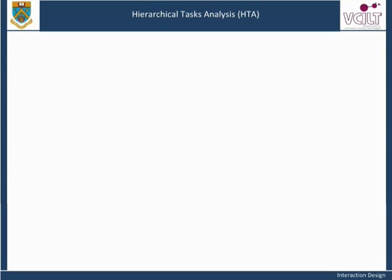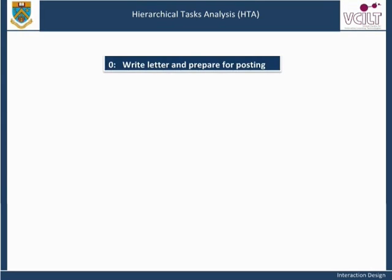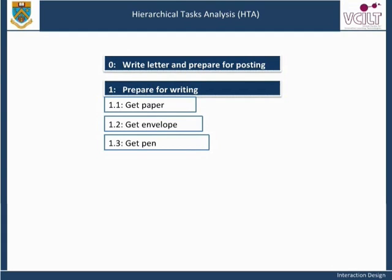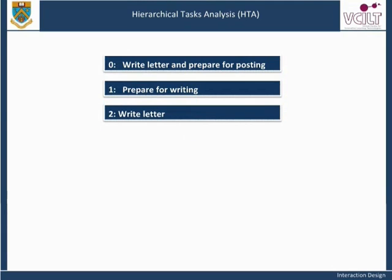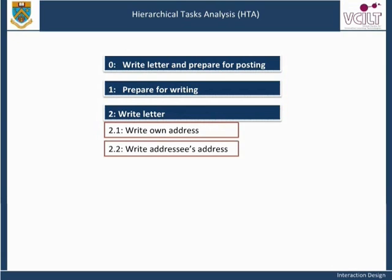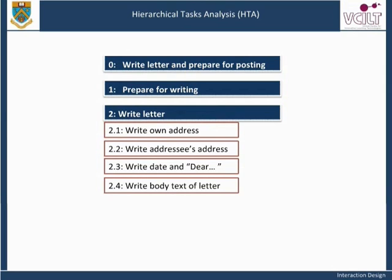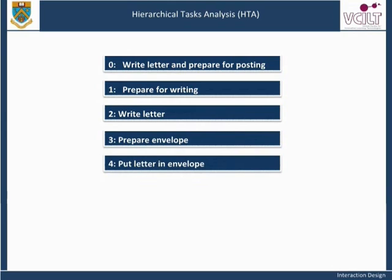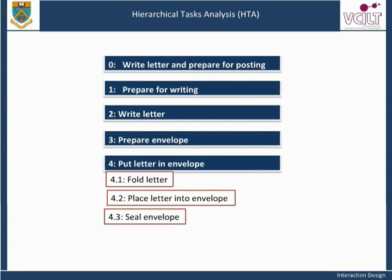We will use this textual notation to expand the task description for the letter-writing task. 0. Write letter and prepare for posting. 1. Prepare for writing. 1.1. Get paper. 1.2. Get envelope. 1.3. Get pen. 1.4. Get address book (not explicitly stated, but clearly necessary). 2. Write letter. 2.1. Write own address. 2.2. Write address. 2.3. Write date and year. 2.4. Write body text of letter. 2.5. Sign off. 3. Prepare envelope. 3.1. Write name on envelope. 3.2. Write address on envelope. 4. Put letter in envelope. 4.1. Fold letter. 4.2. Place letter into envelope. 4.3. Seal envelope.